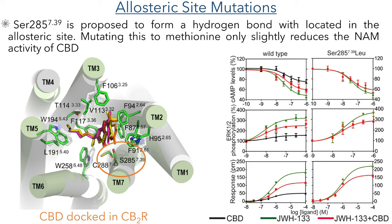The final mutation was carried out on serine-285. This amino acid contains a hydroxyl group and is proposed to form a hydrogen bond with ligands within the allosteric site. Mutating this amino acid to methionine, which cannot act as a hydrogen bond donor, only slightly reduced the negative allosteric modulation activity of CBD, suggesting that this hydrogen bond does not have a major impact on the binding affinity of the ligand to this receptor site.